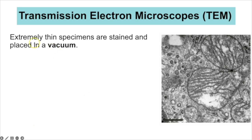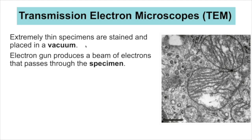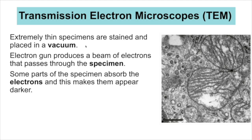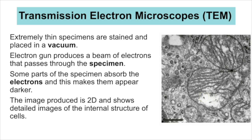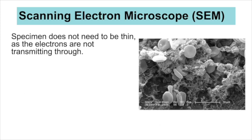For transmission electron microscopes (TEM), the specimen must be very thin — an extremely thin slice. It is stained and placed in a vacuum. An electron gun releases a beam of electrons, the electromagnet focuses it, and the electrons transmit through the specimen. Parts that absorb electrons appear darker; parts that don't appear lighter. This produces a 2D image, which is really useful for seeing the internal structures of cells.